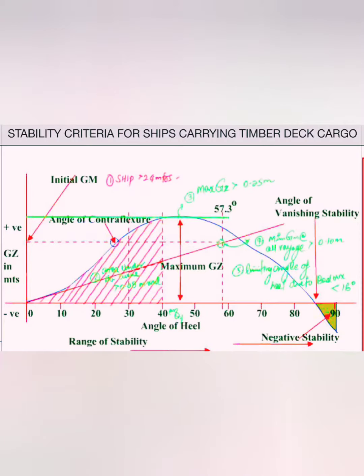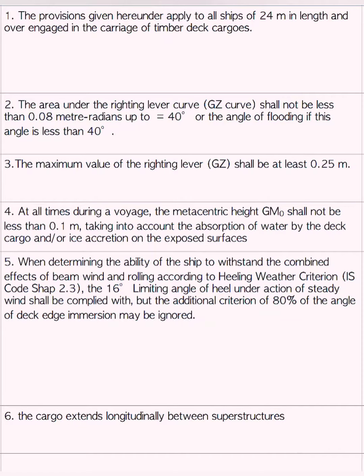Now let's talk about ships carrying timber deck cargo. Imagine a normal ship carrying timber on deck longitudinally — obviously there is more freeboard, and as timber is buoyant in nature it adds to the additional stability of the ship. This provision applies to all ships more than 24 meters in length. Because the ship has more stability, the area under the righting lever curve shall not be less than 0.08 m·rad at the angle of 40 degrees. In normal ships the area required up to 40 degrees was 0.09, so the requirement has reduced.